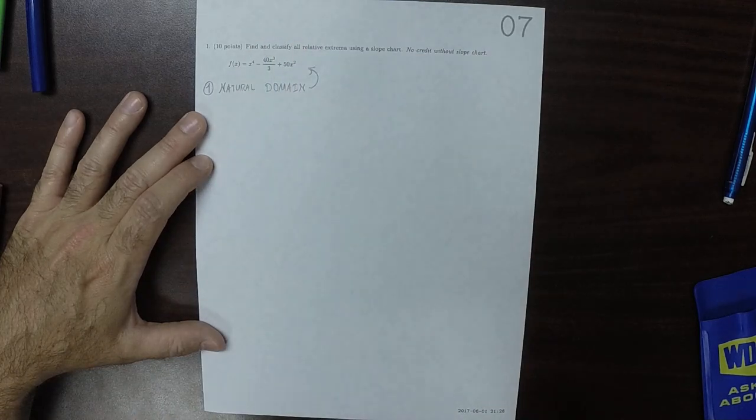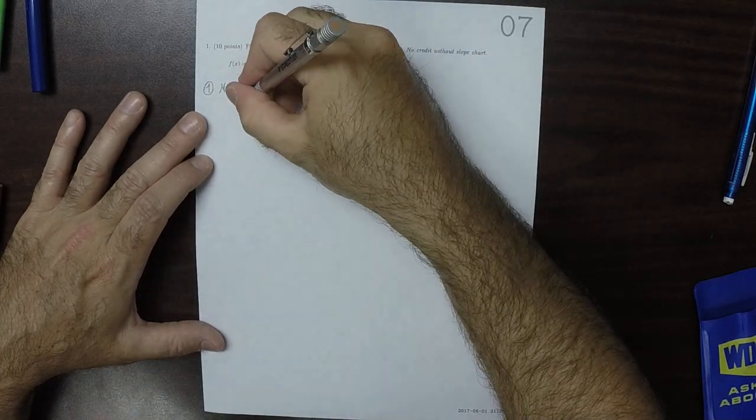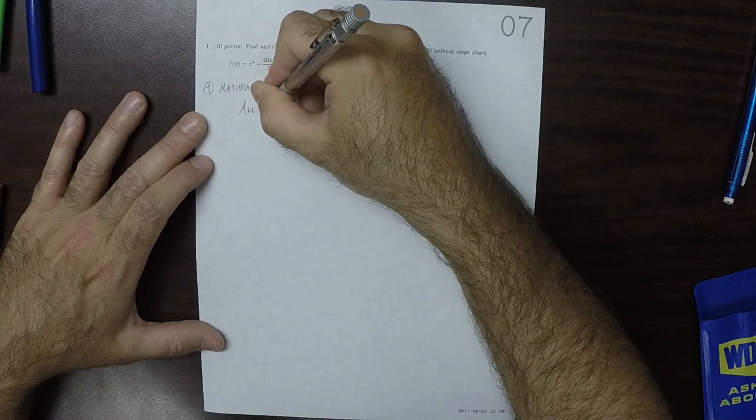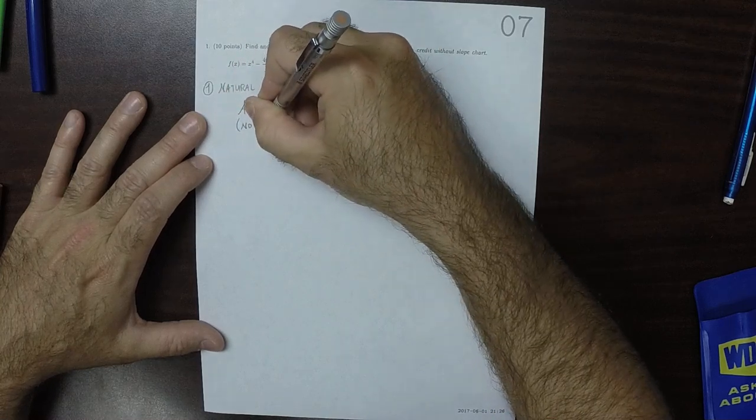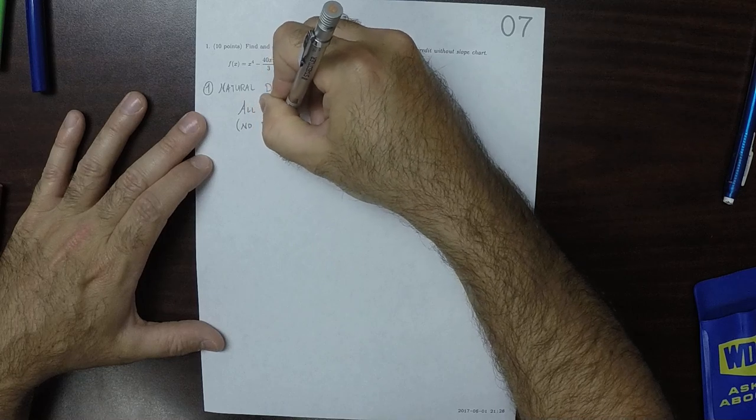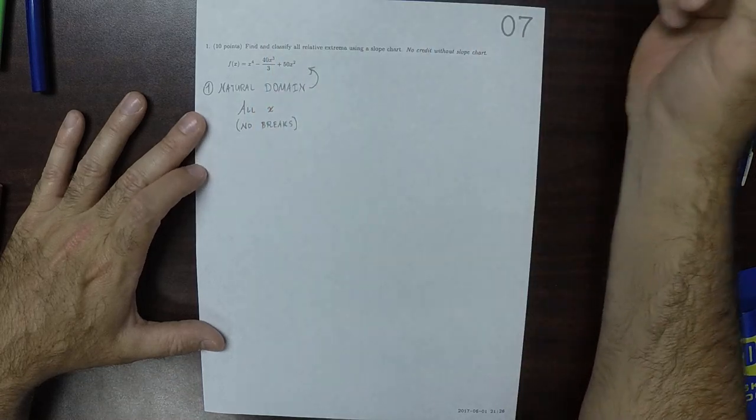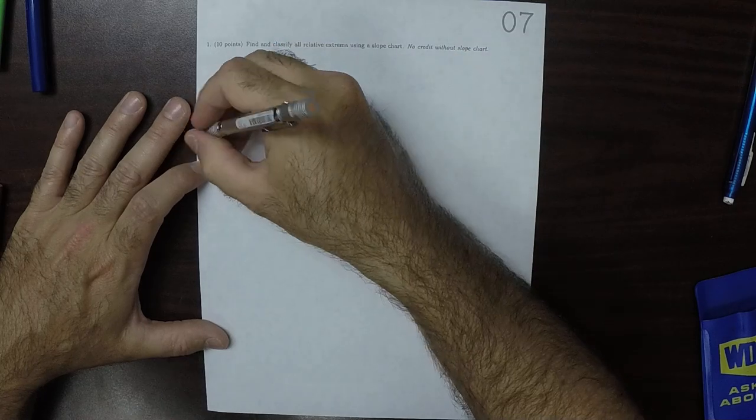The natural domain, because f is a polynomial, is all x, which is to say that there are no breaks in the natural domain. That's good. That means that this question is relatively easy.